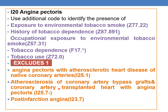These categories — I25.11 and I25.7 series — have combination codes for angina pectoris. When you have a combination code, you need not code angina pectoris separately.